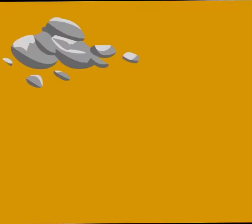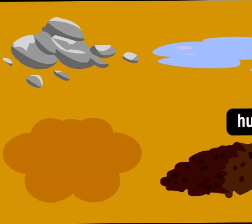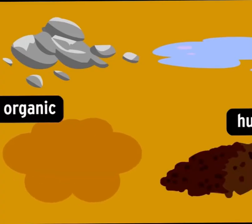Soil is a blend of rock and mineral fragments, water, air, and humus. That's carbon rich or organic material left behind by living things.